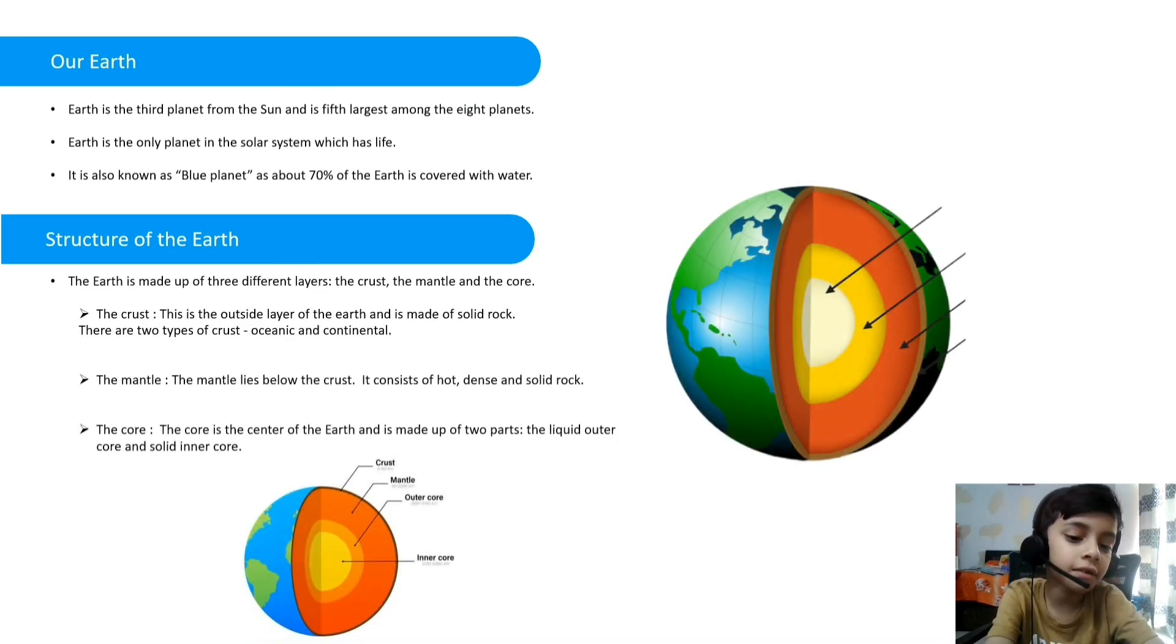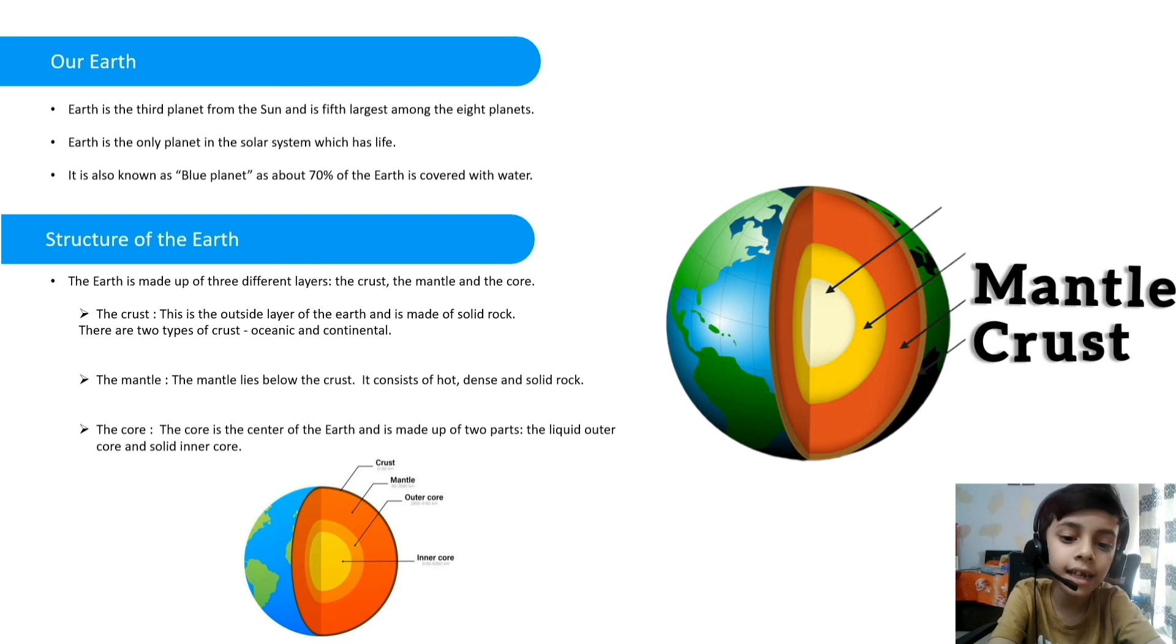Structure of the Earth. The Earth is made of three different layers: the crust, the mantle and the core. The crust is the outer layer of the Earth and it is made of solid rock. There are two types of crust: oceanic and continental. The mantle lies below the crust and contains hot, dense and solid rock. The core is the center of the Earth and is made up of two parts: the liquid outer core and solid inner core.